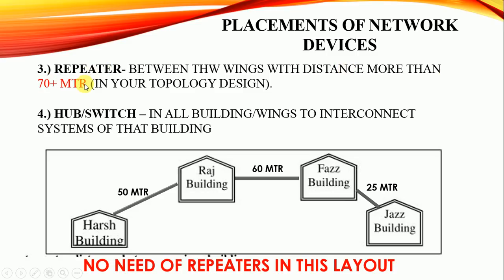The next network device is the repeater. A repeater will be placed between wings where the distance is more than 70 meters. In our topology design, the distances are 50 m, 60 m, and 25 m, so no repeater is needed here. However, if for example the distance between two buildings were 90 meters, then we would place one repeater between those buildings.